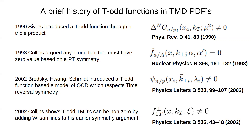In 1990, Sivers introduced the non-zero T-Odd function as a consequence of the triple product. In 1993, Collins argued that this type of function must be zero based on P-T symmetry. In 2002, Brodsky introduced a model of QCD respecting time reversal symmetry and again found a non-zero T-Odd function. Later in 2002, Collins amended his previous results by the addition of Wilson lines. Note also the change in notation over time.